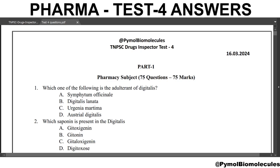Part 1: Pharmacy Paper. First question: which one of the following is the adulterant of digitalis? The answer is Sempervivum officinale. The other adulterants are comfrey leaves, primrose leaves and Verbascum thapsis.